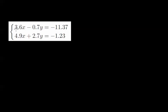We're asked to solve this simultaneous equation, and it's a pretty nasty one. 3.6x take away 0.7y equals minus 11.37, and so on and so forth. The calculator can solve these simultaneous equations as well. So let's do that now.